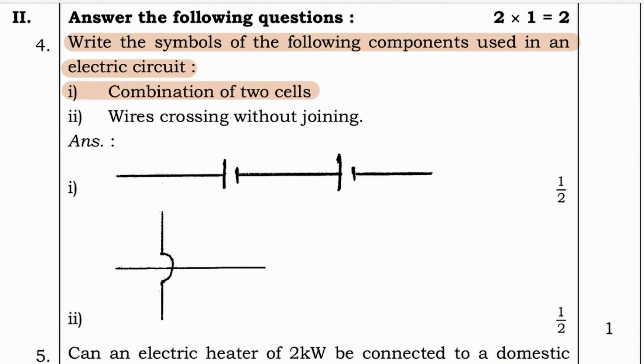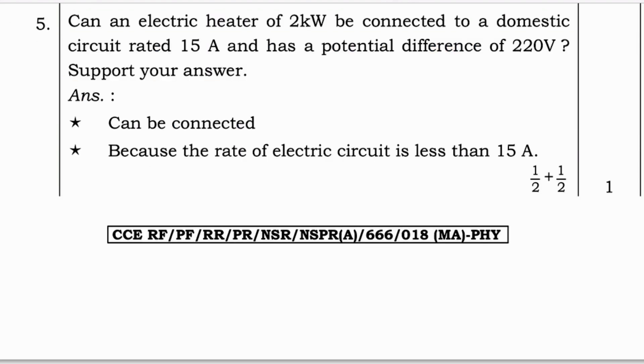Write the symbols of the following components used in an electric circuit. One, combination of two cells. Two, wires crossing without joining. So here they have given the symbols.